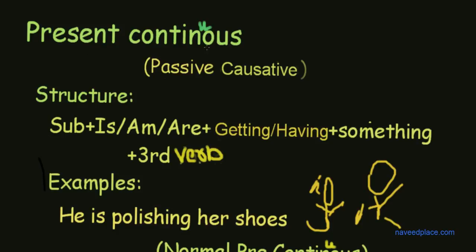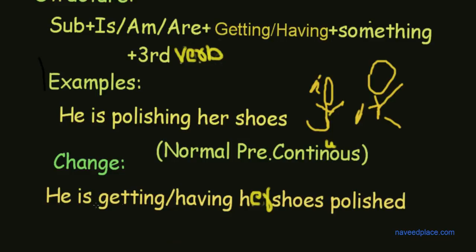Now you see the present continuous passive causative example. So the example is here: he is getting or having her shoes polished.